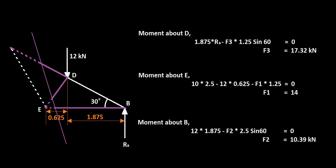I've removed the unwanted portion and shown only the members where we need to find the forces. Member 1, 2, and 3 are identified. It is really simple — you just need to take moments about a couple of points assuming the body is in equilibrium. You can take moment about D, B, or E. Note that E is outside or to the right of the section line, but in some cases you may use an external point — that is acceptable in this method.